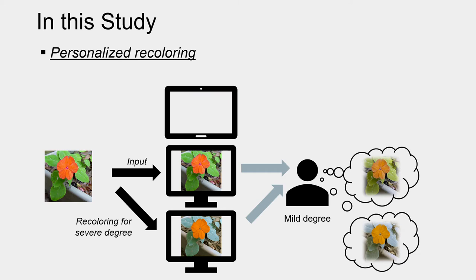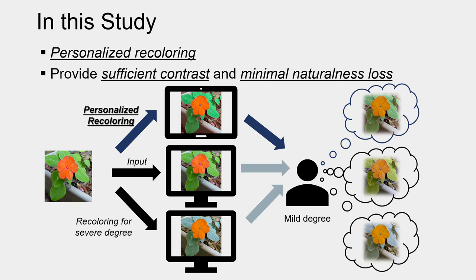In this study, we propose a novel algorithm with a recolored image adjusting to the personal degree of CVD to provide the best effect of compensation to the individual.